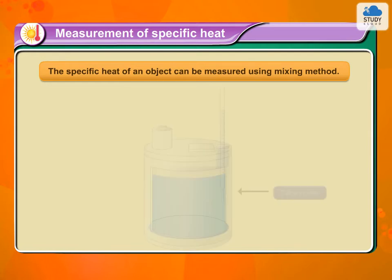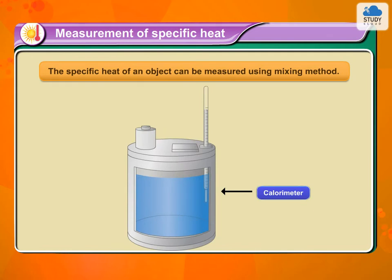For this, calorimeter is used. If a hot solid object is put in the water in a calorimeter, heat exchange between the hot object and the water and calorimeter starts. This continues till the temperature of the solid object, water and the calorimeter become equal.